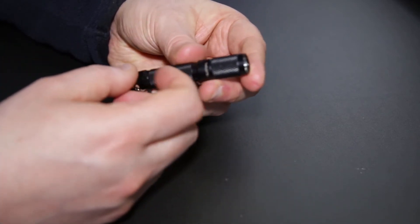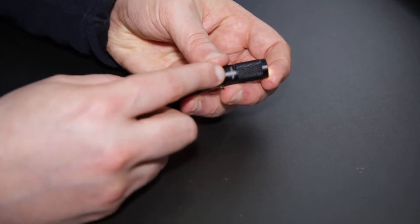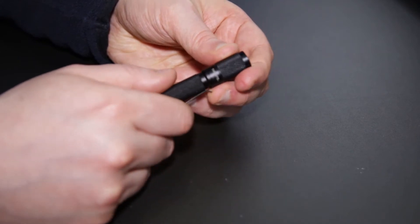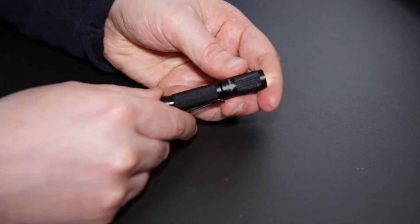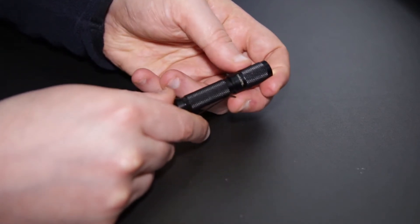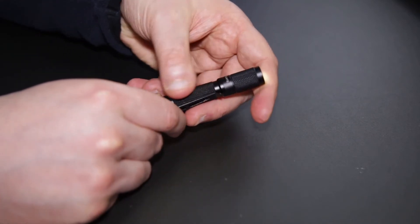The knurling is really good and it's got a nice feel to it. You could probably tell it was a TI3 from another similarly sized torch just from the knurling.